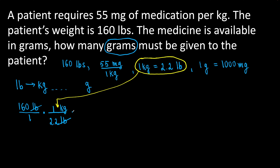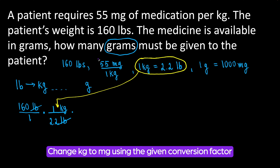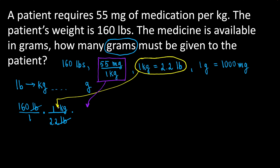Now let's keep moving because we need to get to grams. We are given the dosage: 55 milligrams per kilogram. We are going to take this conversion factor and plug it in so as to get rid of kilograms and be left with milligrams. We have kilograms on top, so we put kilograms in the denominator so they cancel out and milligrams go on top in the numerator. Let's plug in the numbers: 1 kilogram goes in the denominator and 55 milligrams go in the numerator. Kilograms cancel out and we are left with milligrams.